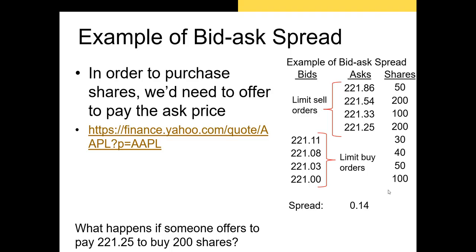Now, what happens if someone offers to pay $221.25 to buy 200 shares in this fictitious example? If someone is willing to pay the lowest asking price immediately, those shares are sold to that investor. Now the lowest asking price becomes $221.33 for 100 shares, and our spread has actually increased to 22 cents — that's $221.33 minus $221.11.